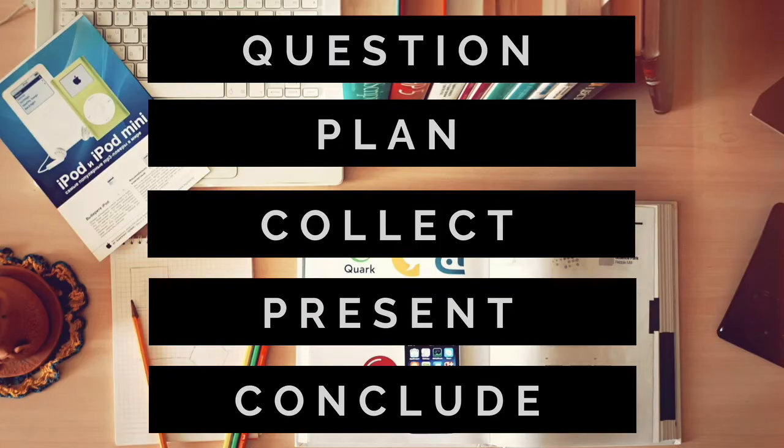A good project should have five different parts. First, you need to ask a question. Then you need to have a plan for collecting data. The third step is you actually have to collect the data. The fourth step is you present your findings. And finally, you state a conclusion. So those are the five steps for having a great statistical project.